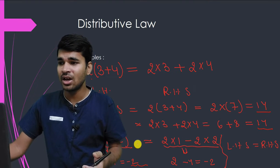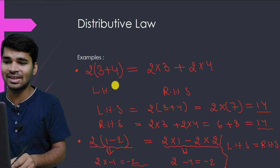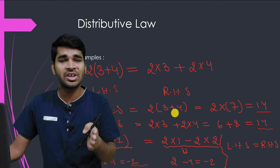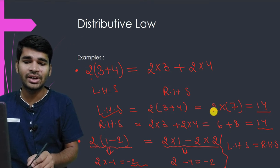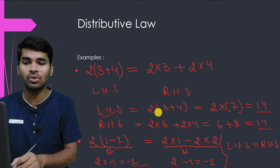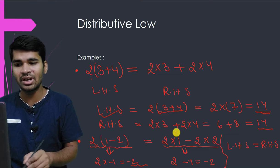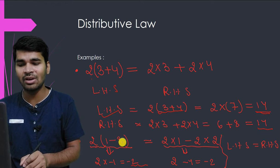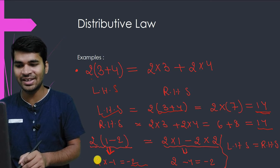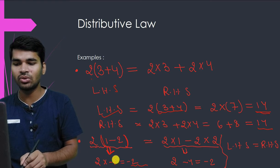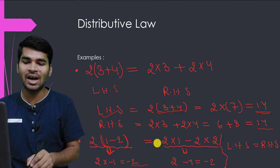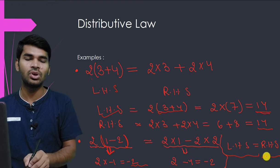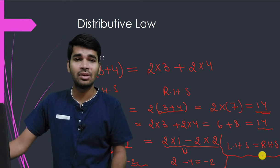Taking more examples: 2 times (3 + 4). LHS gives 2 times 7 = 14, and RHS gives 2 times 3 plus 2 times 4 = 14. Similarly, for 2 times (1 - 2): LHS gives 2 times (-1) = -2, and RHS gives 2 times 1 plus 2 times (-2) = 2 - 4 = -2. LHS equals RHS again. For any three real numbers, distributive law holds.